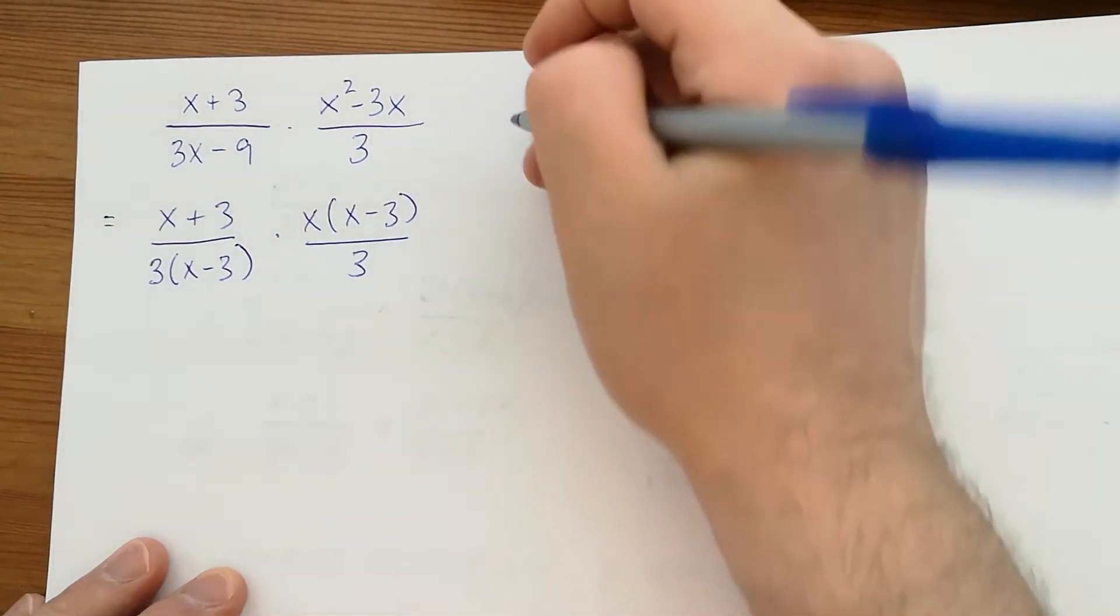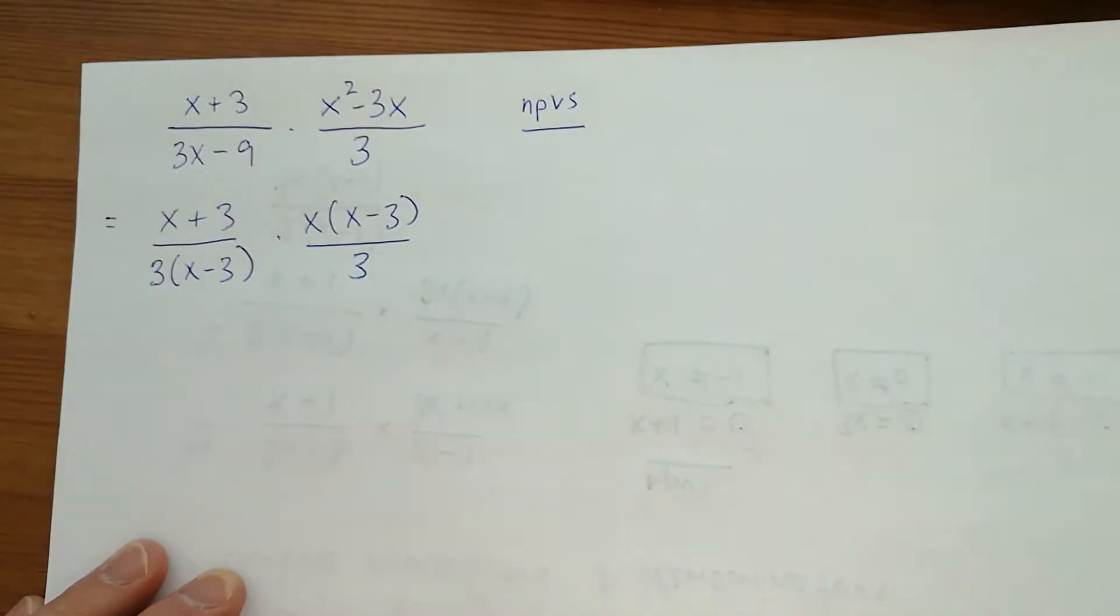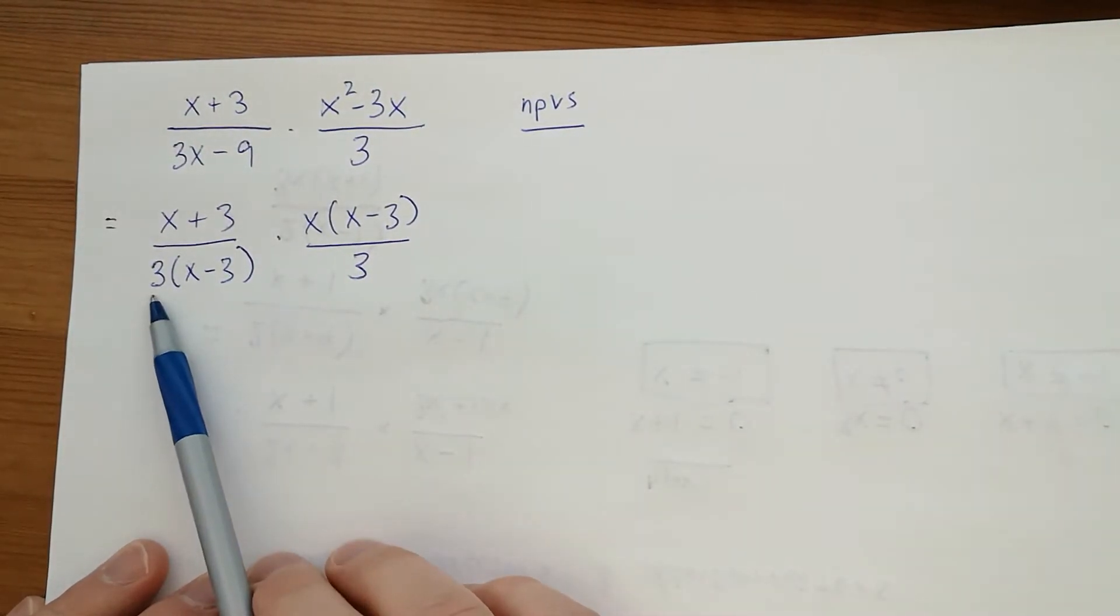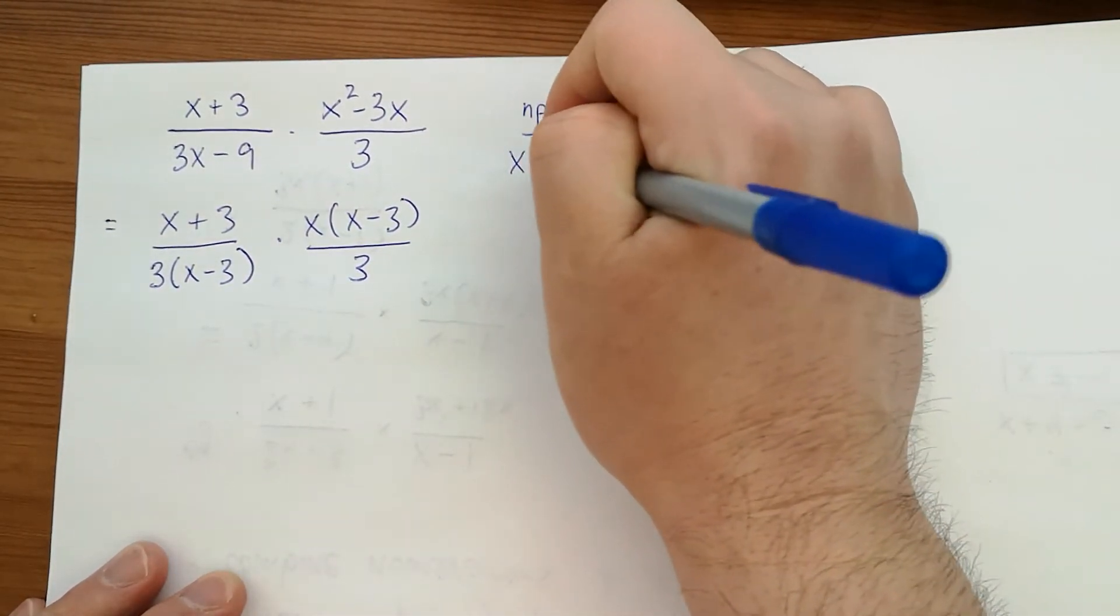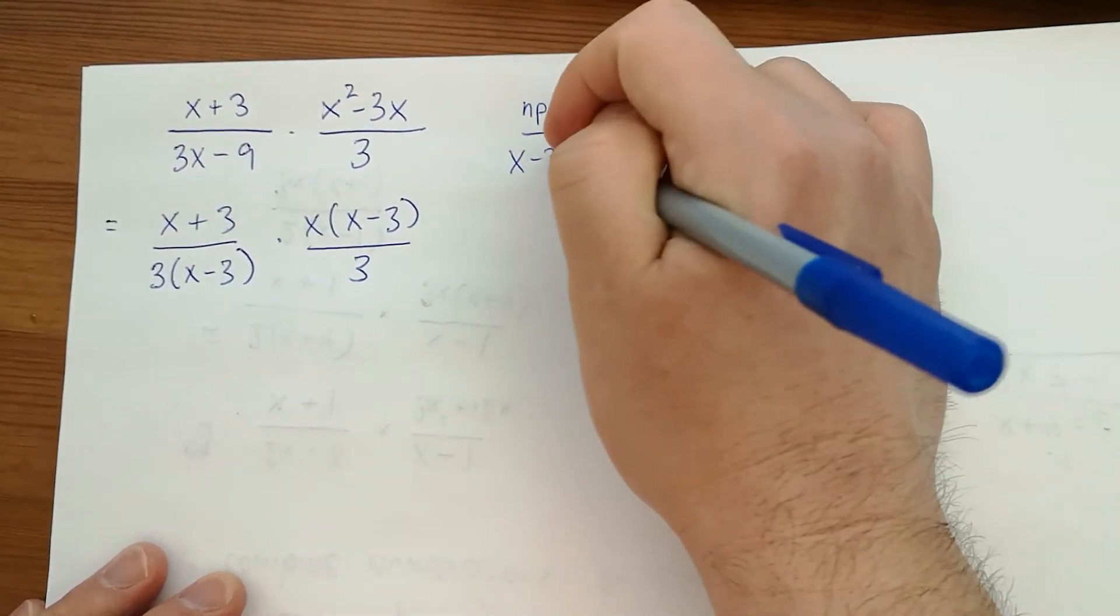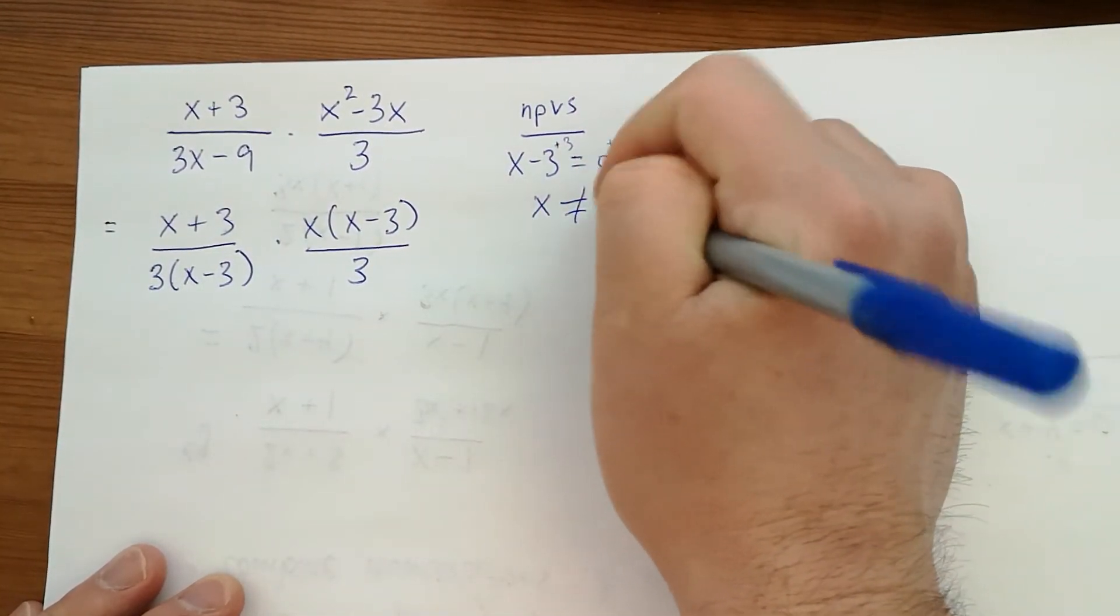Now we look at our denominators to get non-permissible values. The term 3 can't equal 0, so you can ignore that. We have x-3; add 3 to both sides, we get a non-permissible value of 3.